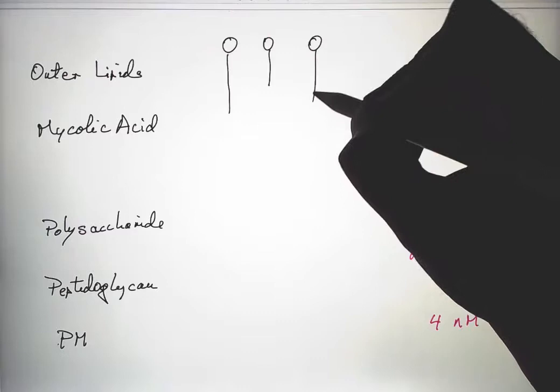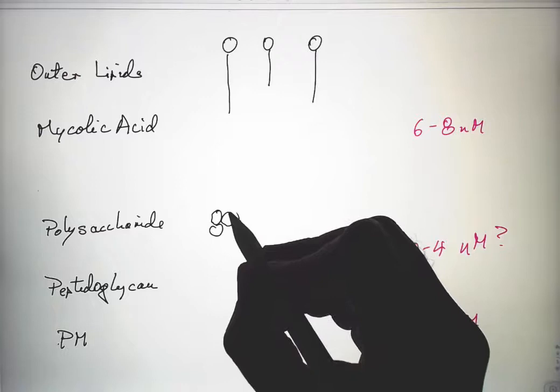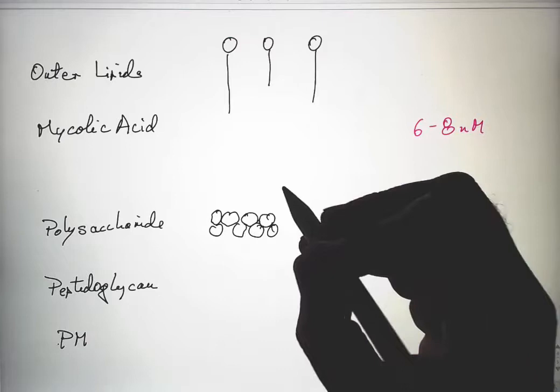Then we have the mycolic acid attached to a polysaccharide layer down here at the base. So a polymer of covalently attached saccharides, sugars.